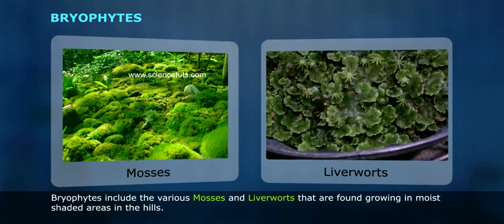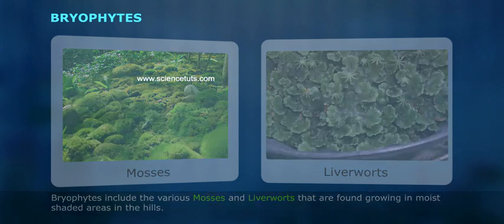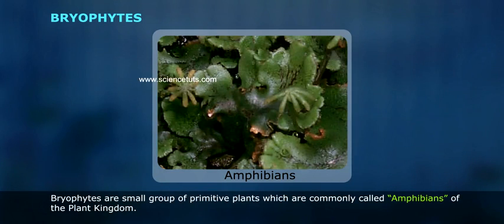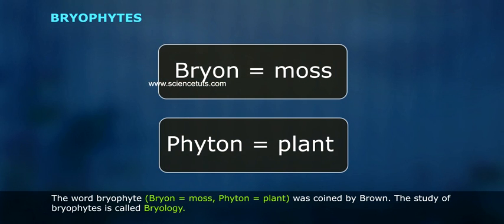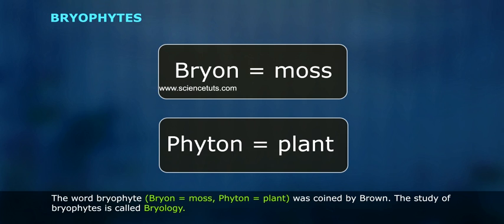Bryophytes include the various mosses and liverworts that are found growing in moist, shaded areas in the hills. Bryophytes are a small group of primitive plants which are commonly called amphibians of the plant kingdom. The word bryophyte — Bryon means moss, Phyton means plant — was coined by Brown. The study of bryophytes is called bryology.